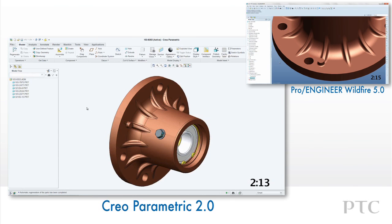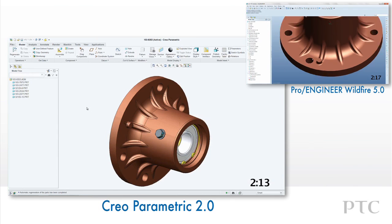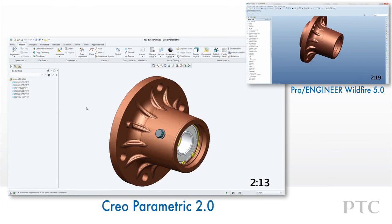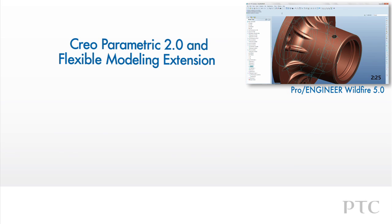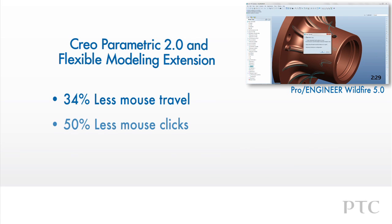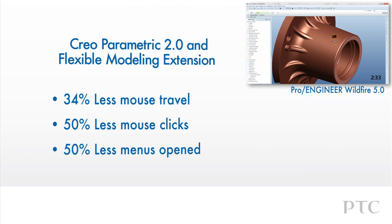We've shown some of the key highlights in Creo Flexible Modeling Extension for Creo Parametric to handle design changes, especially late-stage design changes. The impact on design productivity is impressive. In this short comparison, we have 34% less mouse travel, 50% less mouse clicks, and 50% less open menus. The result is improved design productivity — I saved some 52% of the time taken to achieve the same result with Creo Parametric compared to ProEngineer Wildfire.